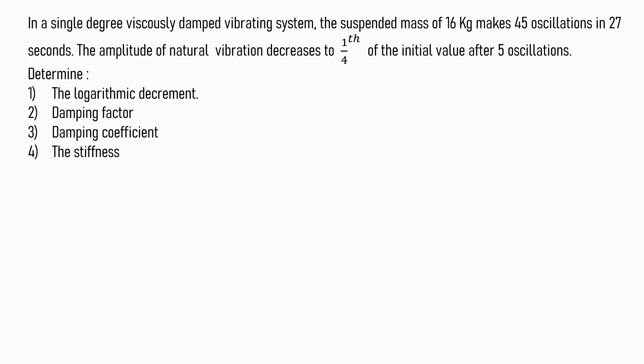Let us see another example. In a single degree viscously damped vibrating system, the suspended mass of 16 kg makes 45 oscillations in 27 seconds. The amplitude of natural vibration decreases to one-fourth of the initial value after 5 oscillations. Let us determine the logarithmic decrement, damping factor, damping coefficient, and the spring stiffness.